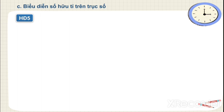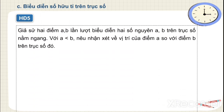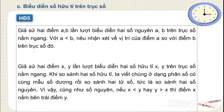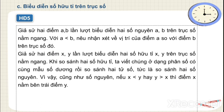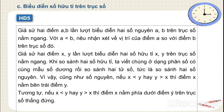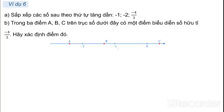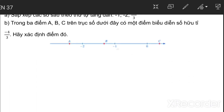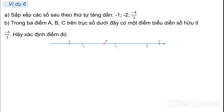Biểu diễn số hữu tỉ trên trục số. Giả sử 2 điểm AB lần lượt biểu diễn 2 số nguyên AB trên trục số ngang, với A nhỏ hơn B. Điểm A nhỏ hơn điểm B thì A sẽ biểu diễn ở bên trái điểm B. Với 2 số hữu tỉ xy, nếu x nhỏ hơn y thì ta viết x ở bên trái điểm y. Ví dụ 6: Sắp xếp các số theo thứ tự tăng dần. Trong 3 điểm A, B, C trên trục số, có 1 điểm biểu diễn số hữu tỉ âm 4 phần 3 — hãy xác định điểm đó.